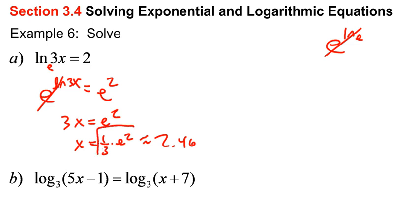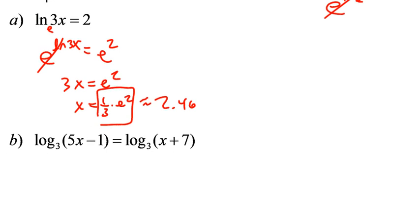But this is the precise answer, and this is your approximate answer. That's why I put the little squiggly lines. It means approximately, because that's a non-repeating decimal that goes on forever.